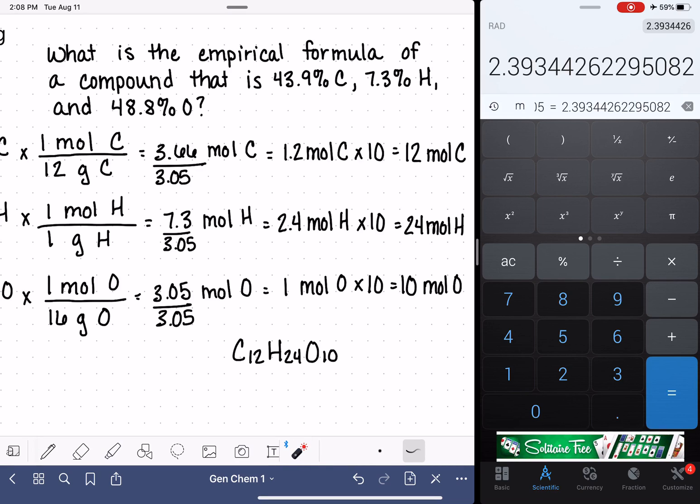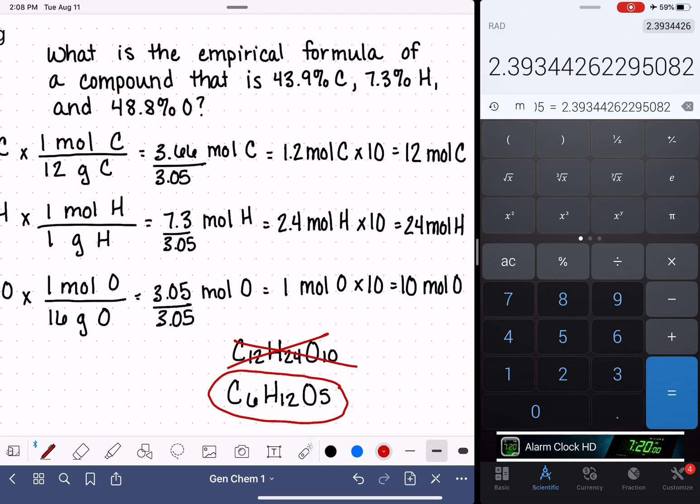So C12H24O10. Now I've got them into nice whole numbers. This is clearly not an empirical formula, because the empirical formula should be the lowest whole number ratio. So my next step then is just to turn this into an empirical formula. It looks like if I divide everything by 2, C6H12O5, that works out perfect. And so here is my empirical formula.